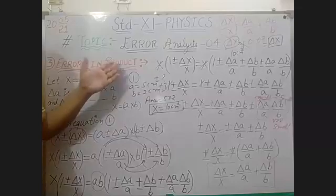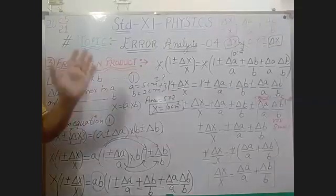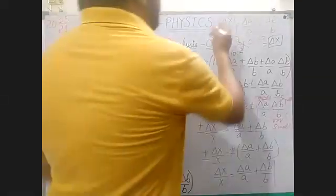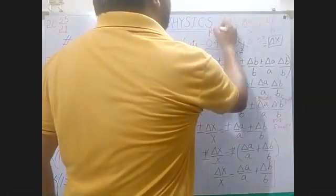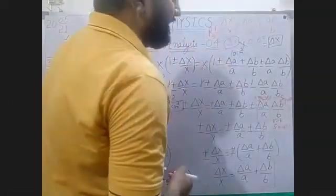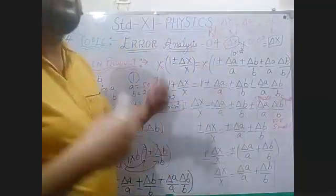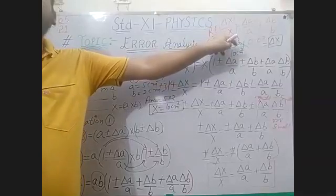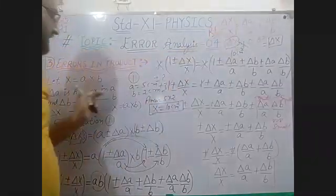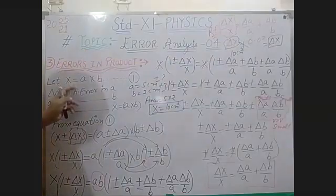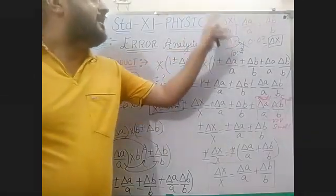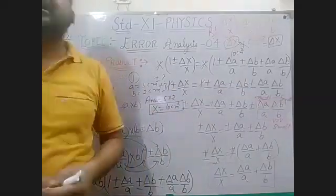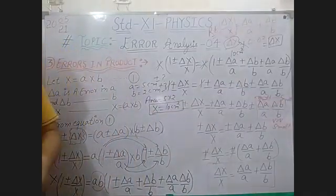So if you want to find the error in a product, you cannot take the absolute error directly. First calculate the relative error, then convert it into absolute error by putting in the value of x. You can also convert this value into percentage error. Thank you, have a nice day.